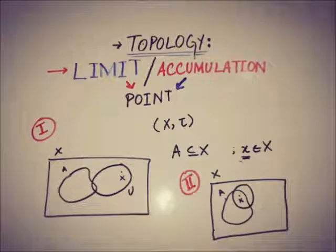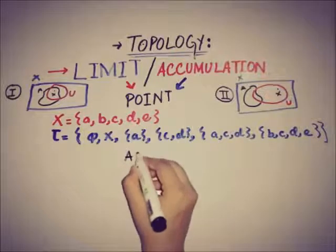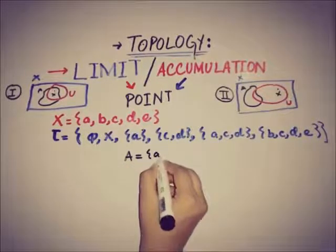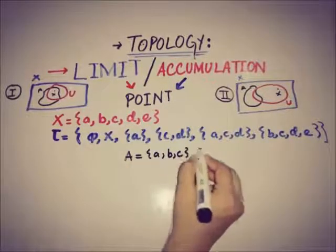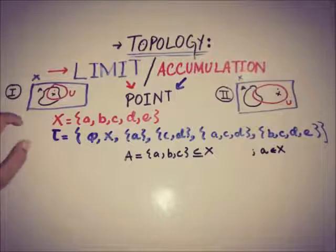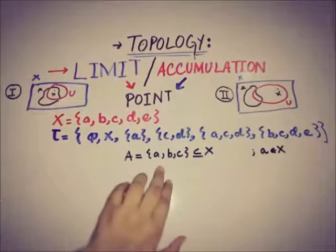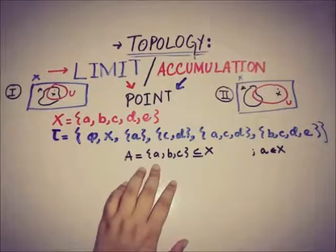Now we will see some examples in order to understand this concept more easily. We have a set X in a topology τ, and A is a subset of X equal to {a, b, c}. We pick the point 'a' as a random point of X. This is the first case where the point 'a' is also a member of that subset A.